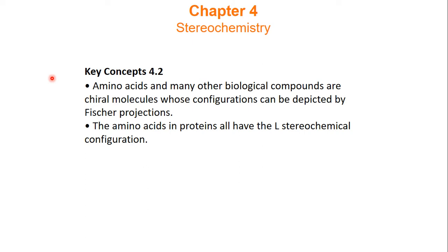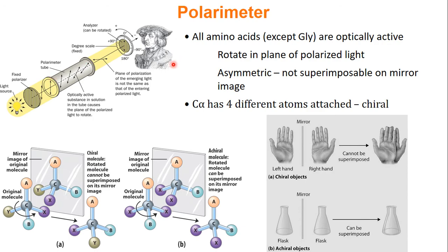In this video we're going to look at the chirality or stereochemistry of amino acids. Every single amino acid we talked about in the previous video, except glycine, are what we call optically active. That is, if we take light and polarize it, they will rotate. Molecules that rotate polarized light we call chiral.